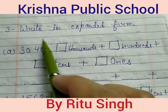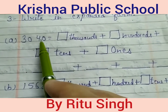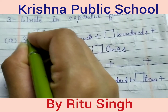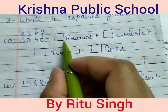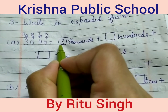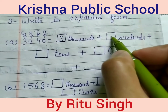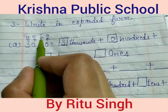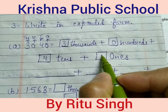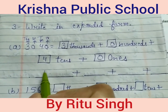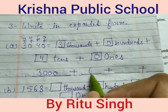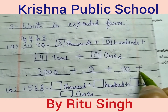Question 3: write in expanded form. The number is 3,040. The places are ones, tens, hundreds, thousands. On the place of thousands, digit is 3 — write 3. On the place of hundreds, digit is 0 — write 0. On the place of tens, digit is 4 — write 4. On the place of ones, digit is 0 — write 0. So write 3000 plus 0 plus 40 plus 0.